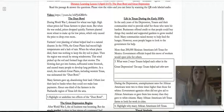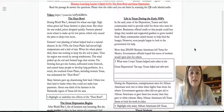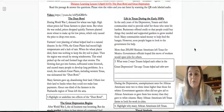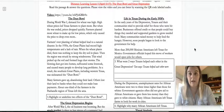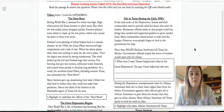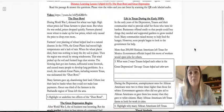Life in Texas during the early 1930s. In the early years of the Depression, Texans and their communities tried to provide relief for those who were hit hardest. So some people that still had their jobs or cities that still had money were trying to provide for the people that had lost their jobs or didn't have money. Businesses offered credit so people could buy things they needed. So they would say, okay, you can just buy it on credit, and you can pay us back whenever you get money. And supported gardens to grow needed food. Many communities raised money to help feed the hungry. However, soon people began to look to the government for help. That only lasts so long, and if more people are losing their jobs, that means less money people can give to others.